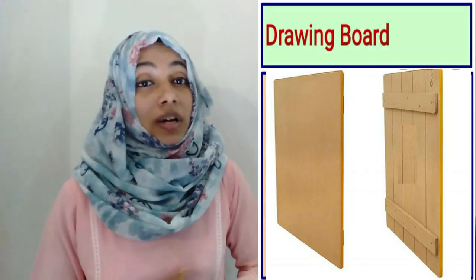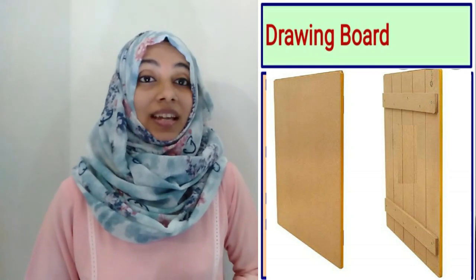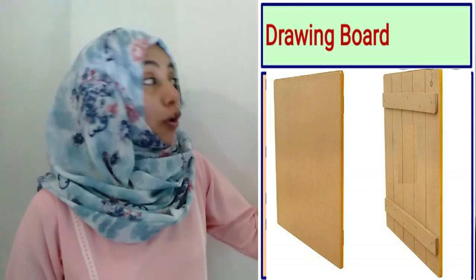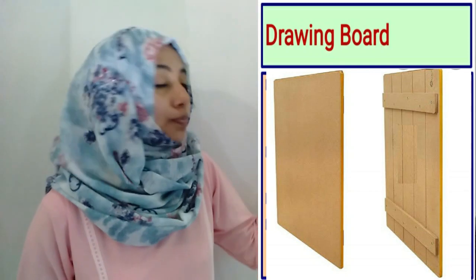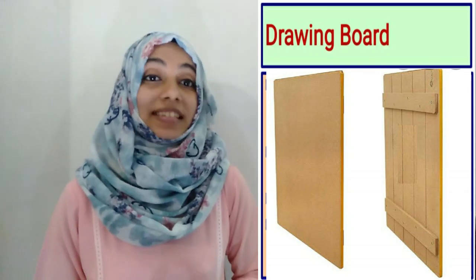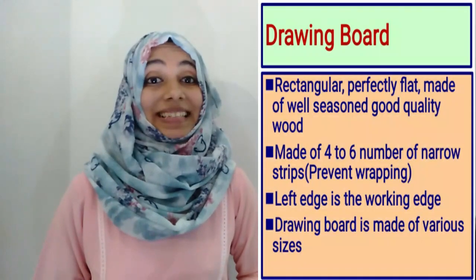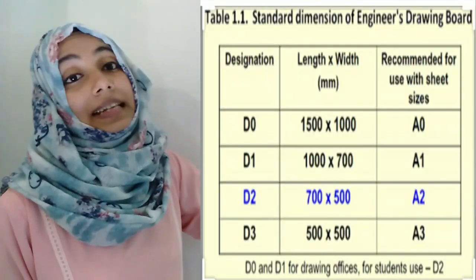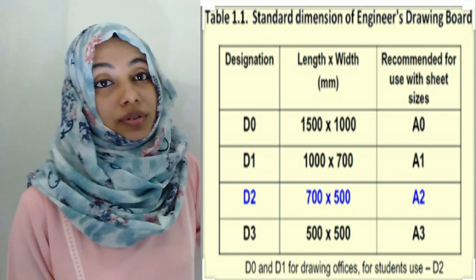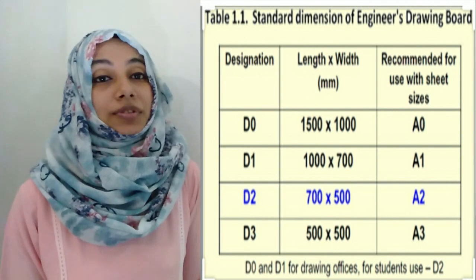Drawing board. Our drawing board has a rectangular shape and it is perfectly flat. It is made of well-seasoned and good quality timber. It is made of 4 to 6 narrow strips which prevents warping. The left edge is the working edge where we fit our mini drafter. Drawing board is available in various sizes. Here is a tabular column showing the standard dimensions of engineer's drawing boards, with 4 sizes available. Their dimensions — length and width — are also given.